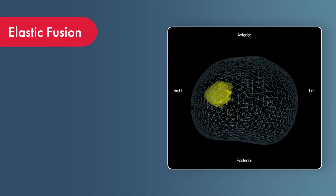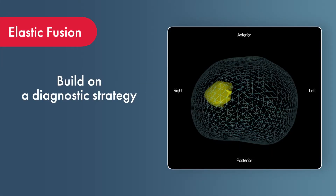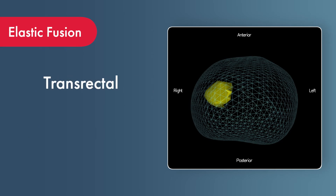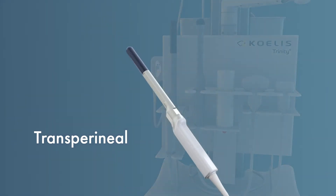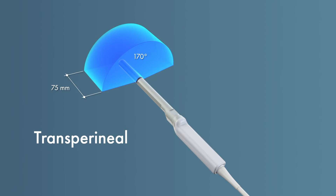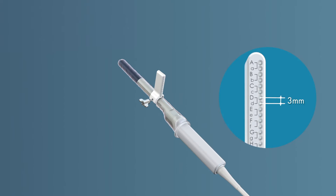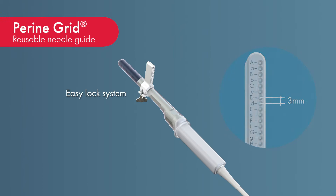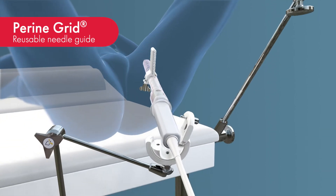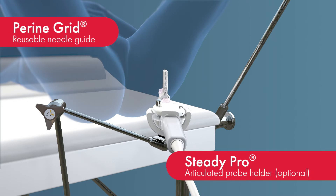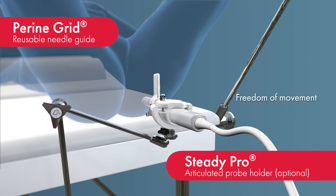We now have a base map on which we can build our diagnostic strategy and, more accurately, aim and precisely track the biopsy needle. Although Coalice Trinity is easily able to perform transvectoral biopsies, our focus today will be on the transperineal technique. For the transperineal approach, the clinician will benefit from Coalice's unique 3D 5-fire probe, which will allow a quick acquisition of the whole volume of the gland by a simple press of a button. He will also use innovations such as the mini-grid linear guide or the SteadyPro probe holder to be in a very adapted and comfortable environment.